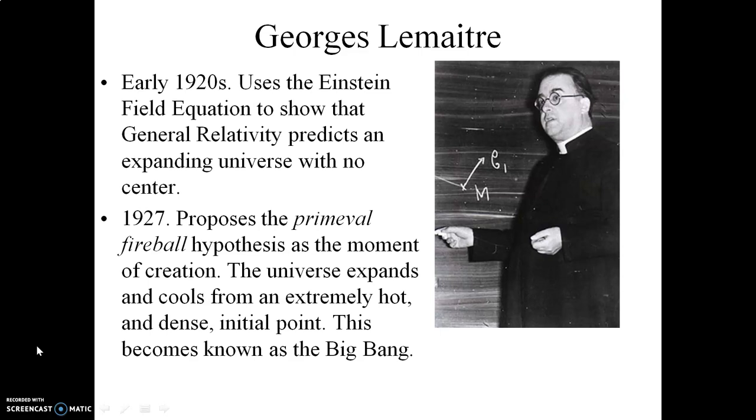Lemaitre, at any rate, proposes in 1927 the beginnings of the Big Bang Theory. He proposes what is called the primeval fireball. The primeval fireball is the idea that if you take the expanding universe as it is right now and kind of run it backwards as a movie, eventually you're going to reach a point where everything in the entire universe is at a point, an extremely hot, dense point, if you will, that is referred to as the primeval fireball. And then for reasons unknown, the universe expanded and cooled from that extremely hot, dense initial point. Eventually, of course, this begins the process of developing the Big Bang Theory of Cosmology, which we'll get to as we proceed.